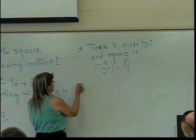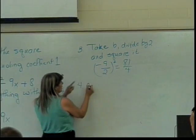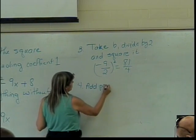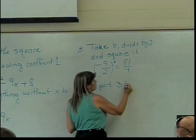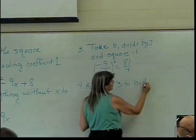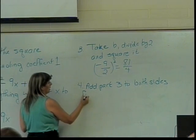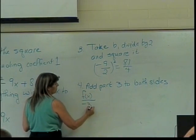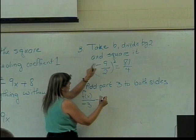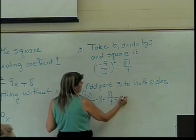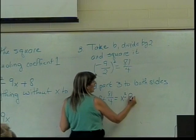So now, step four is to add this thing as part three to both sides of the equation. So on the left side, I have this big mess, f(x) divided by negative 3 minus 8 plus 81 over 4. And on the right side, I have x squared minus 9x.